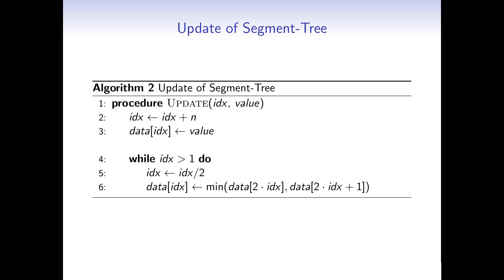Here is the update algorithm. The input parameters are the index of the value in the original array and the new value. First we compute the index in the tree by adding n to the array index. Then we assign the new value to data[index]. As we saw earlier, we then update all parent nodes: as long as index is greater than 1, we divide by 2 to go to the parent, and recompute that node's value as the minimum of its two children.